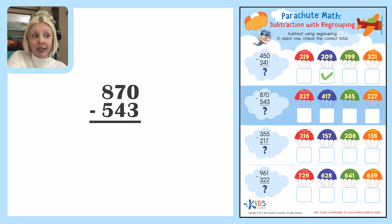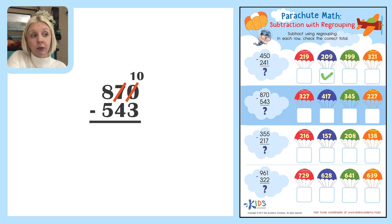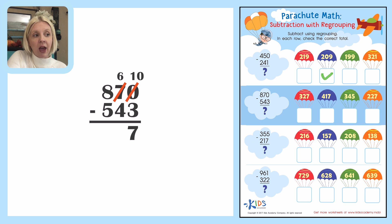In my ones place I need to take three from zero but I can't do that. So I need to turn it into a ten — the only way I can do that is by subtracting ten from the tens side, so I'm going to turn that seven into a six. Now: ten minus three is seven, six minus four is two, and eight minus five is three. The answer is 327, and I'm going to put a check next to that one.